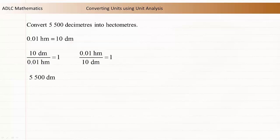To use the unit analysis strategy, begin by writing the known measurement. Next, select the conversion ratio that has the same unit in the denominator. Now multiply the original measurement by this conversion ratio.